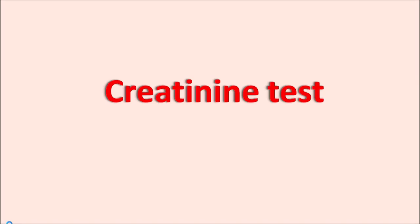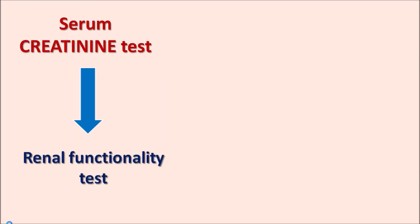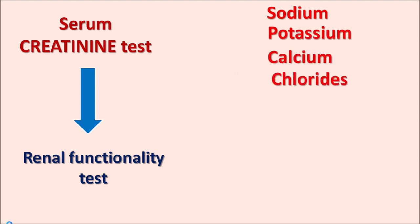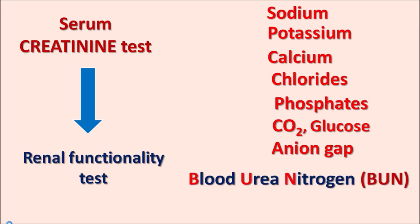Today we are going to discuss the creatinine test. The serum creatinine test is one of the renal functionality tests. The renal panel test includes estimation of many parameters, such as electrolytes like sodium, potassium, calcium, chlorides, and phosphates, all estimated within the blood, along with carbon dioxide, glucose, anion gap, and blood urea nitrogen (BUN).